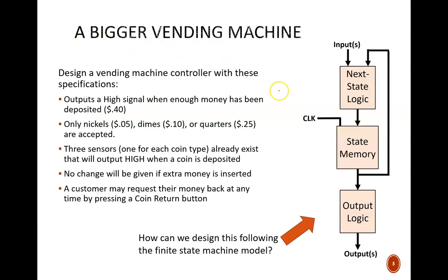The first broad review topic is the finite state machine model, shown here. Our goal is to follow this model to design a vending machine controller with these specifications. One, outputs a high signal when enough money has been deposited. The price is 40 cents. Two, only accepts nickels, dimes, and quarters. No pennies, no dollars, or other coins.